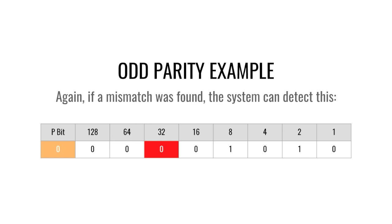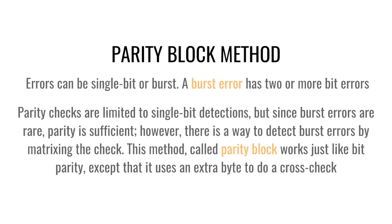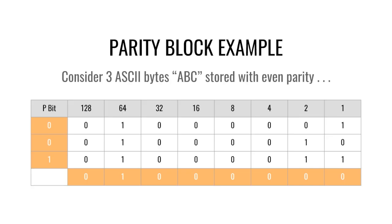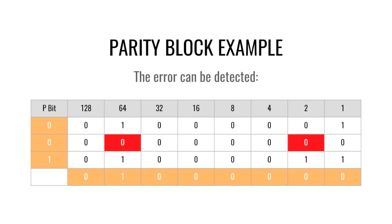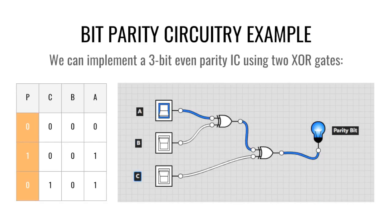What happens if two bits are out of place? That's called a burst error — two or more incorrect bits. We can detect this with the parity block method. For example, with three ASCII bytes A (65), B (66), and C (67), we apply even parity left to right as normal, but also top to bottom, allowing us to detect a burst error. Bit parity can also be represented in a circuit or integrated circuit — a three-bit even parity circuit uses two XOR gates, and the truth table on the left can be replicated in the integrated circuit.